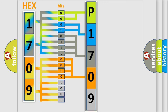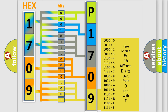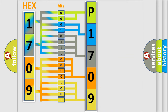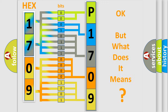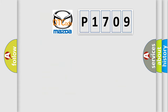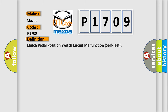A single byte conceals 256 possible combinations. We now know in what way the diagnostic tool translates the received information into a more comprehensible format. The number itself does not make sense to us if we cannot assign information about what it actually expresses. So, what does the diagnostic trouble code P1709 interpret specifically for Mazda car manufacturers? The basic definition is: Clutch Pedal Position switch circuit malfunction self-test.